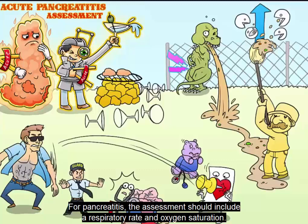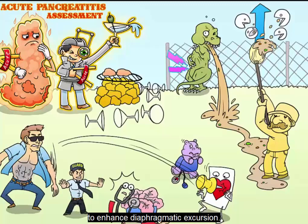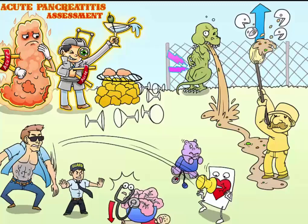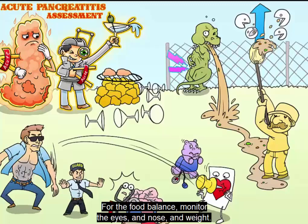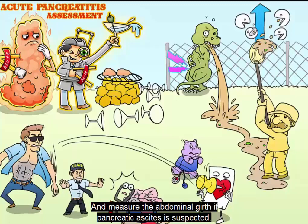For pancreatitis, the assessment should include respiratory rate and oxygen saturation. Auscultate breath sounds, and the patient should be upright in a semi-Fowler's position to enhance diaphragmatic excursion. Coughing and deep breathing can help improve respiratory function. For fluid balance, monitor intake and output and weights, and measure abdominal girth if pancreatic ascites is suspected.